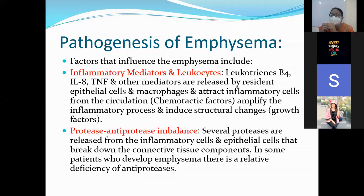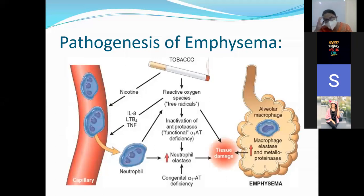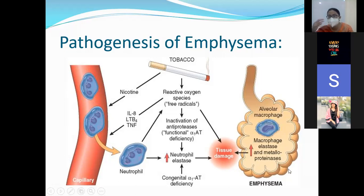The proteases are responsible for the breakdown of proteins, while antiproteases decrease the level of proteases and are protective. But in emphysema, there is a deficiency of antiproteases. Whenever there is a deficiency of antiproteases, the proteases level will be high and causes destruction. The pathogenesis shows that chronic injury like smoking causes release of reactive oxygen species, which inactivate the antiproteases level, causing increased proteases like elastase, which then causes tissue damage by activation of the macrophages.